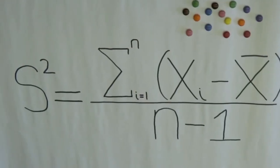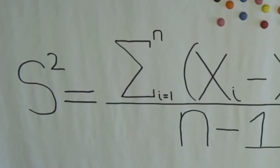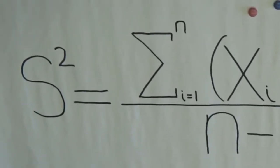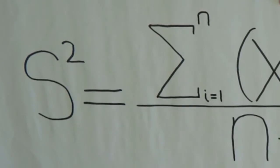To begin, we're first going to learn how to calculate sample variance. Sample variance is denoted by s squared. I will talk about why I chose s squared instead of s in a bit.